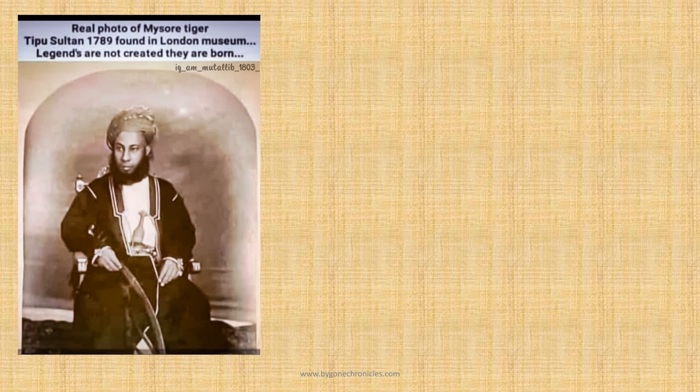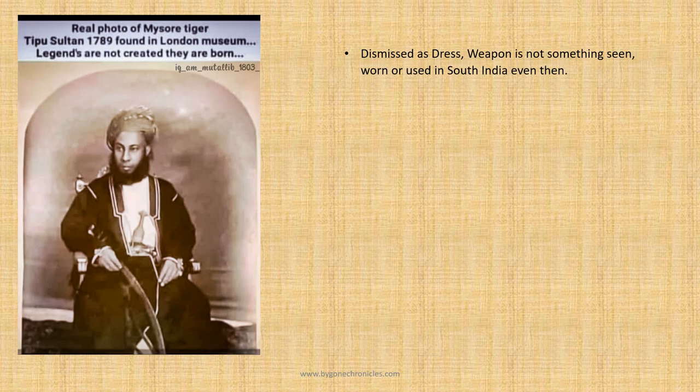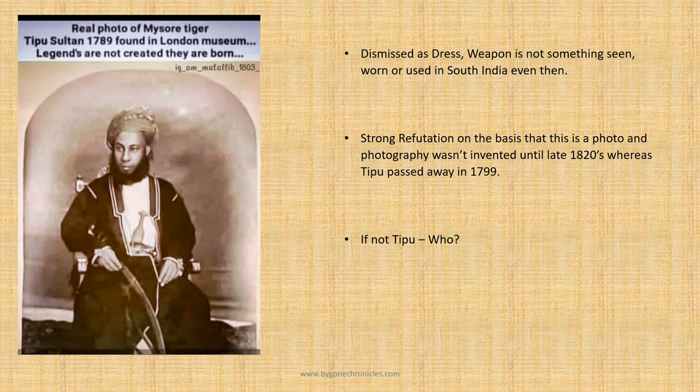The first image which we looked at was this. It is the photo of what appears to be an African gentleman. Harsha dismissed this image saying that photography wasn't invented until the late 1820s, early 1830s, and Tipu, as we know, passed away in 1799 during the 4th Anglo-Mysore War. So this is definitely not an image of Tipu Sultan.